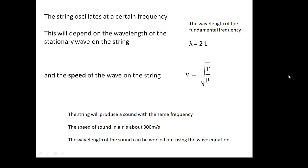The string oscillates at a certain frequency, and we can work out the fundamental frequency. We know the wavelength is twice the length of the string, because the length equals half a wavelength. The speed of the wave on the string is given by v = √(T/μ), where T is the tension and μ is the mass per unit length. That tells us the speed of the wave on the string.